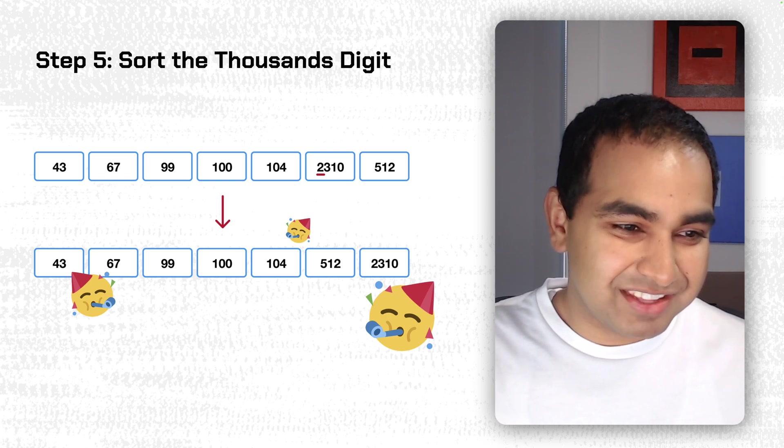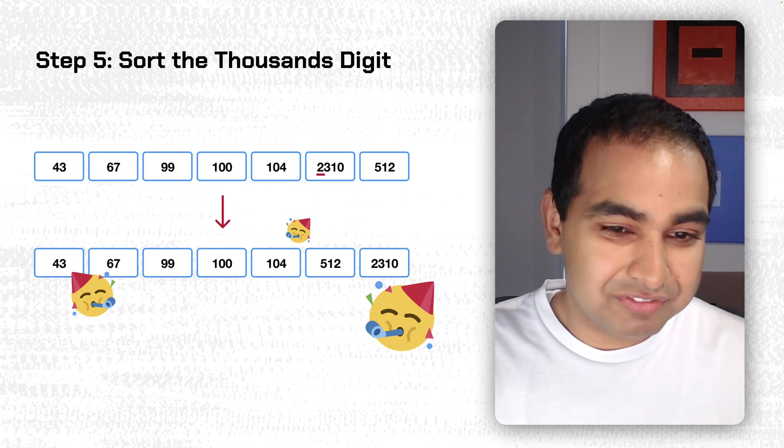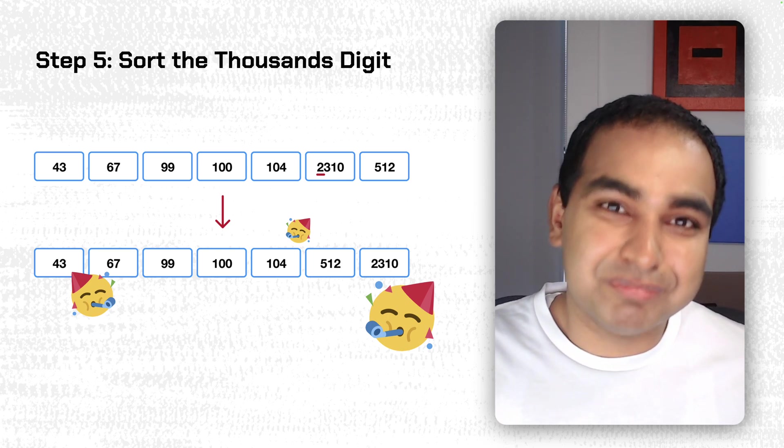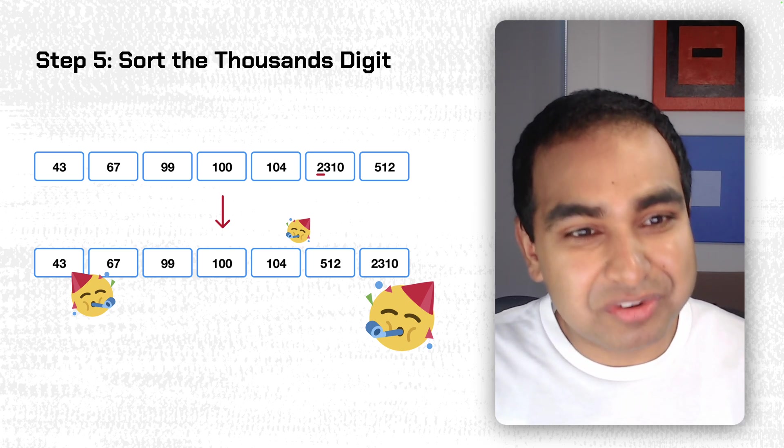You can see it's 43, 67, 99, 100, 104, 512, 2310. The numbers are increasing from smallest to largest, from left to right. So we have our sorted array.